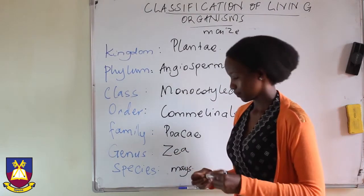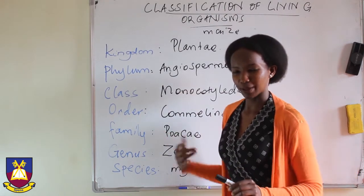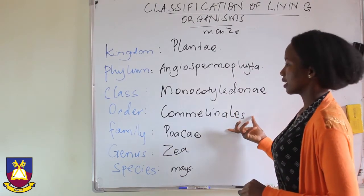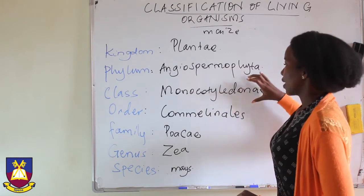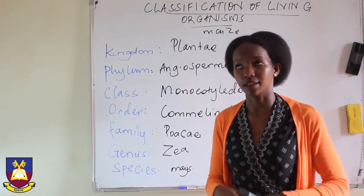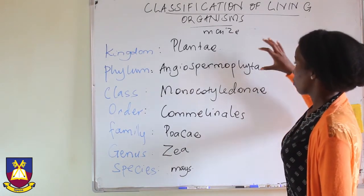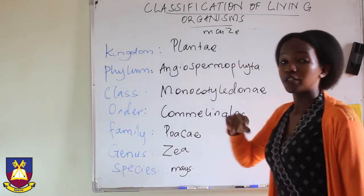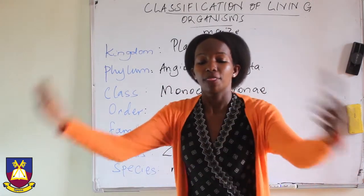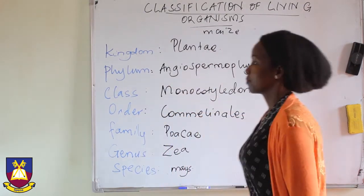Maize, the real maize that we eat, is part of a genus we call Zea, along with other plants that look like maize, of family Poaceae — plants that have those huge leaves like maize. Then Commelinales is the order. Commelinales is part of what we call monocotyledonii, which involves all monocotyledonous plants like rice and wheat. Monocotyledonous plants are part of angiospermatophyta — the flowering plants. Flowering plants are part of kingdom Plantae, where we find all plants, including ferns, mosses, maize, and mangoes.